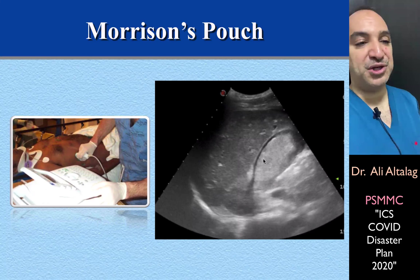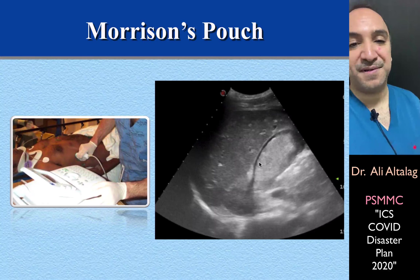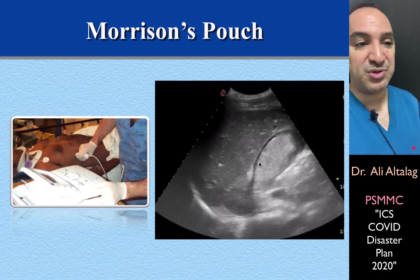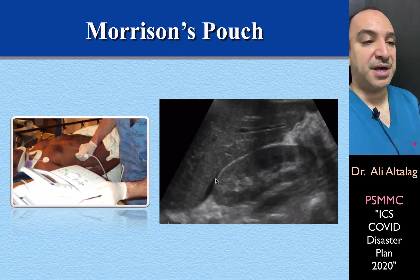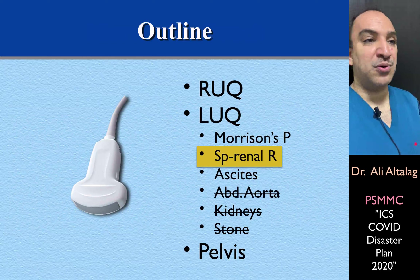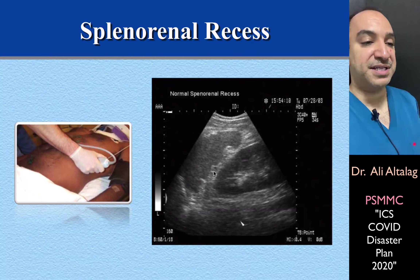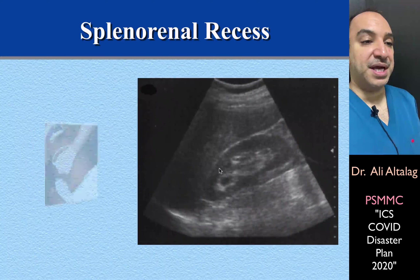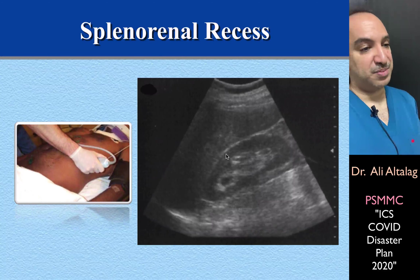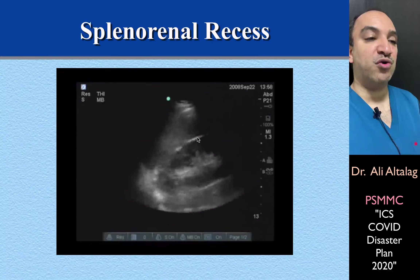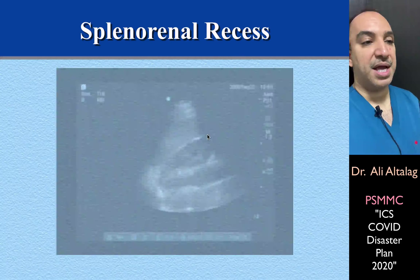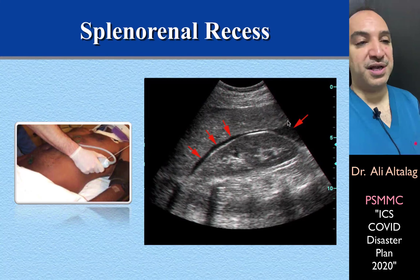In a post-trauma patient, there is a black shadow at Morrison's pouch, indicating bleeding intra-abdominally — blood has reached the Morrison's pouch, also called the hepatorenal recess. On the other side, we have the splenorenal recess, where you see the diaphragm, spleen, and left kidney. In a live image of a normal splenorenal recess, there is no fluid there. An abnormal image shows fluid at the splenorenal recess extending downwards.